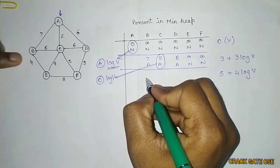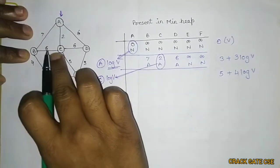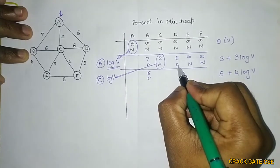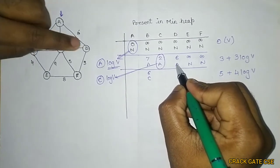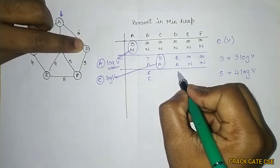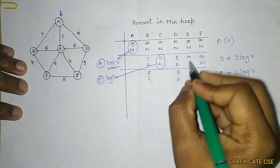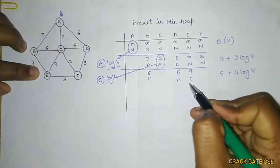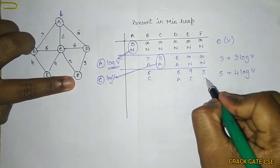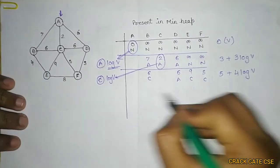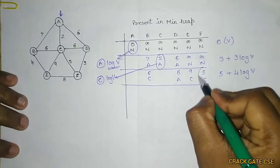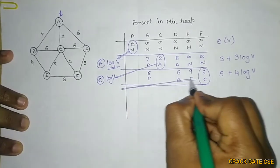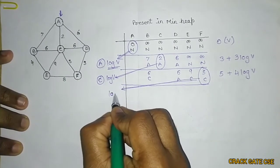After selecting C, we update values. For B: previously 7; from C it's 6, so update to 6 with parent C. For D: remains 6 with parent C (same, no change needed). For E: value becomes 9 with parent C. For F: value becomes 5 with parent C. The next minimum is 5 (vertex F), so we extract F, taking O(log V).